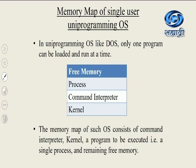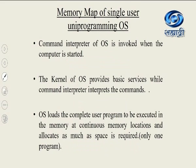Let us first see the memory map of a single-user uniprogramming operating system. Uni means one program — so in a uniprogramming operating system like DOS, only one program can be loaded and run at a time. You can see the memory map of such an operating system. It consists of a command interpreter, kernel and a program to be executed — that is only a single process — and the remaining memory is free. The command interpreter is invoked when the computer is started, and the kernel provides basic services while the command interpreter interprets commands. Initially, operating system programs are loaded.